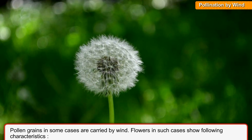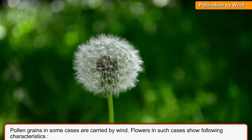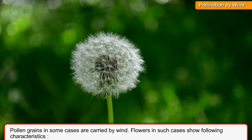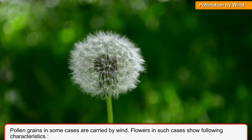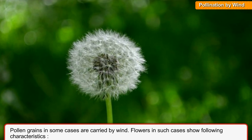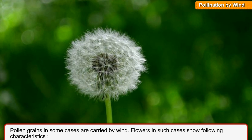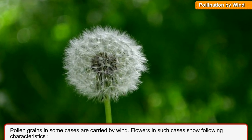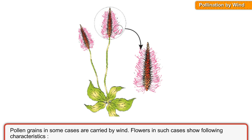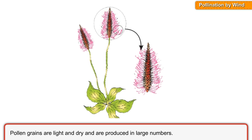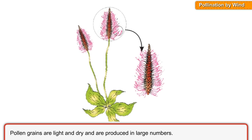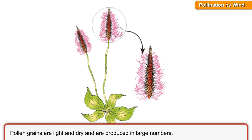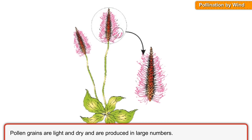Pollination by wind. Pollen grains in some cases are carried by wind. Flowers in such cases show the following characteristics: pollen grains are light and dry and are produced in large numbers.